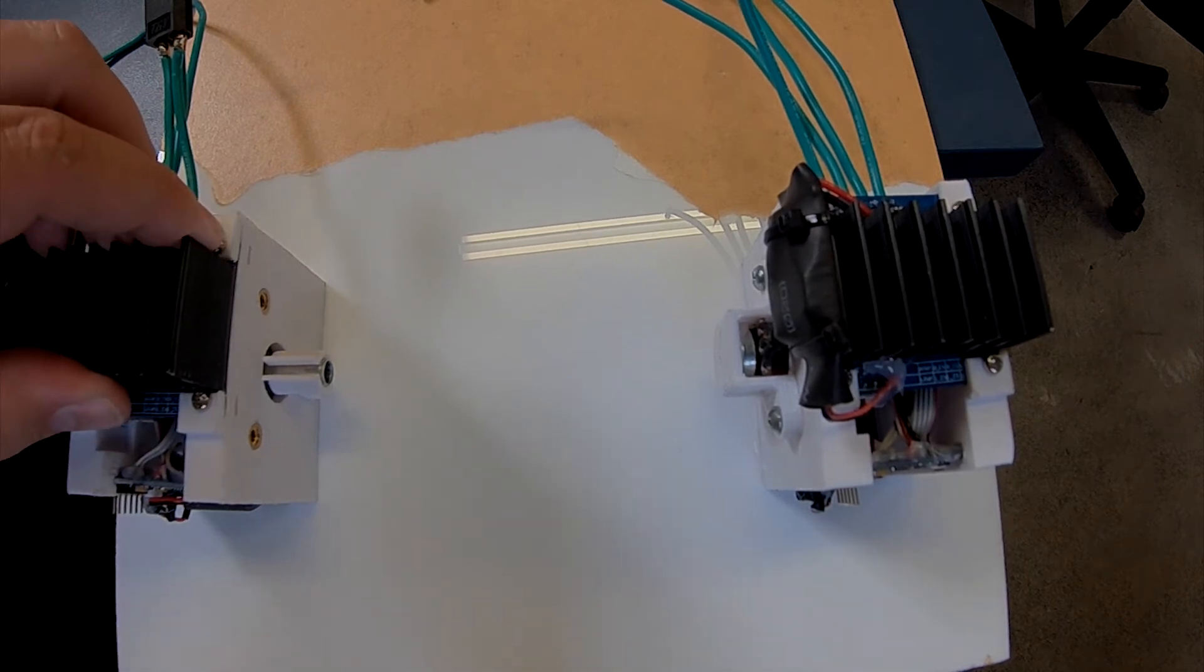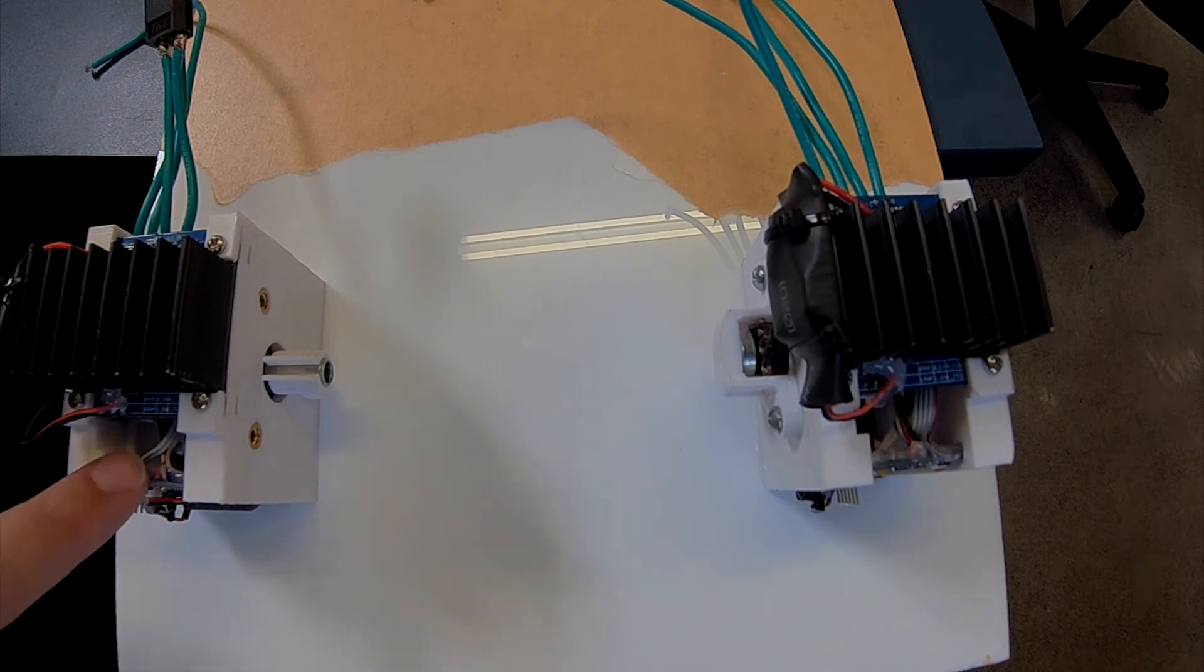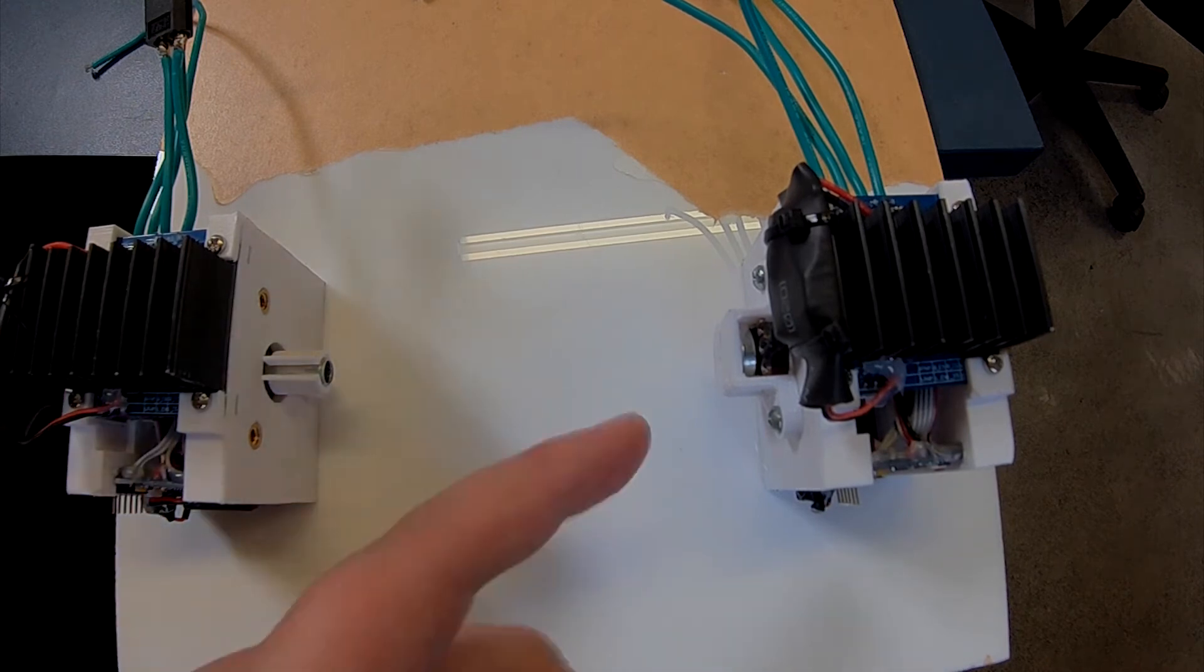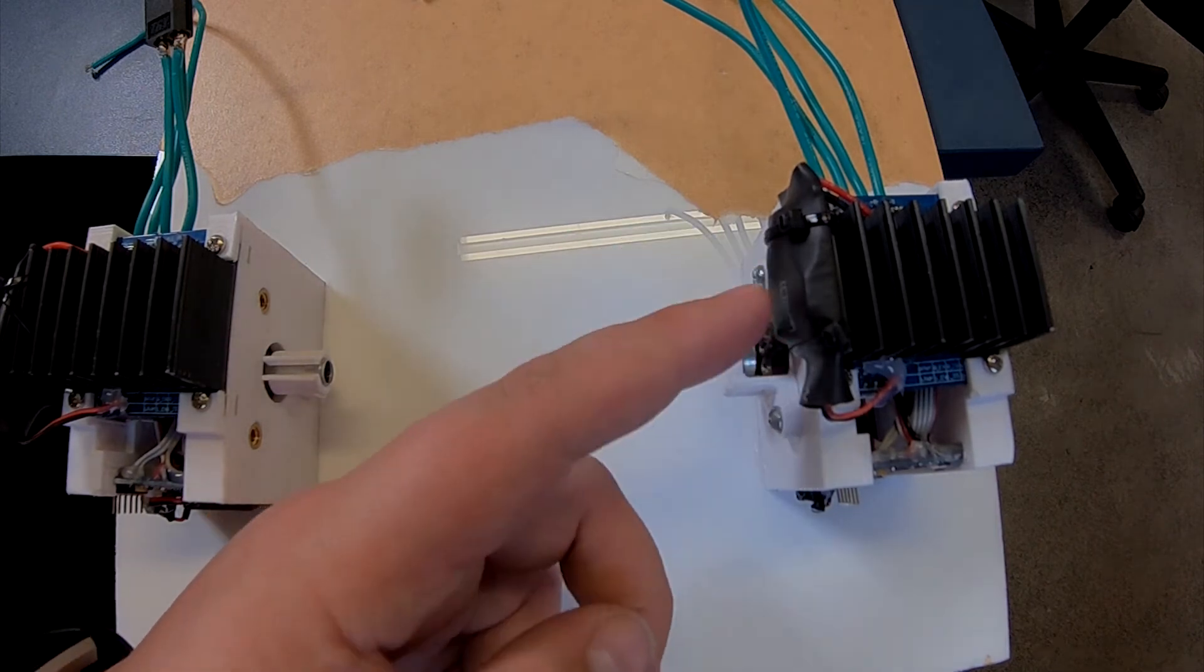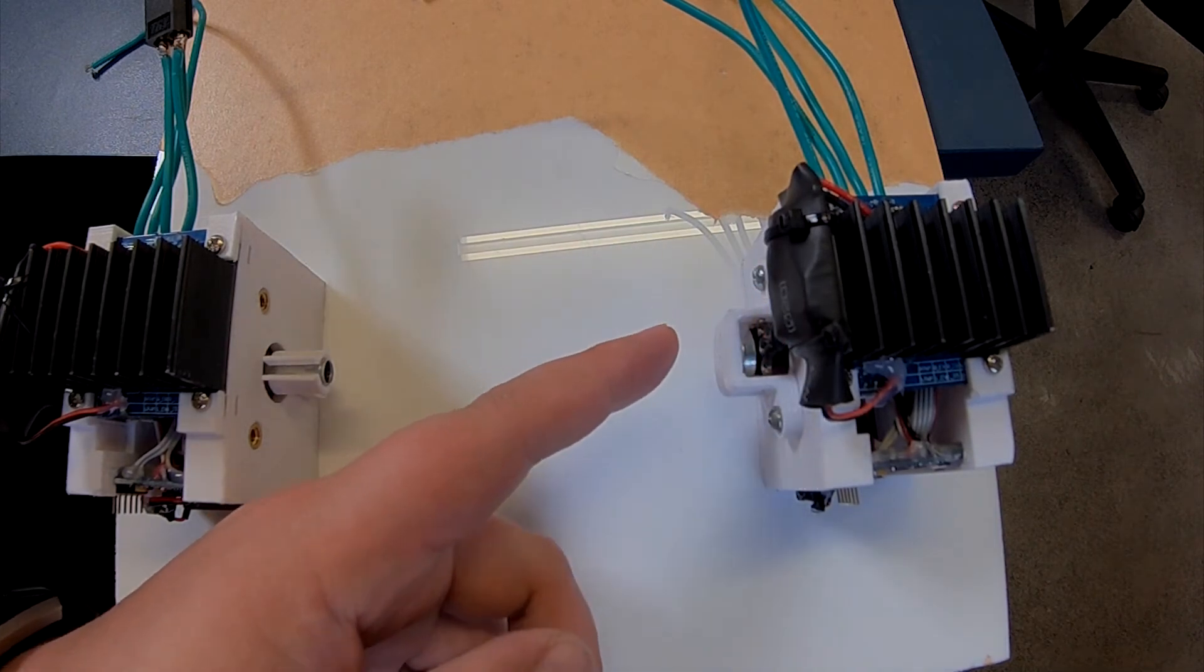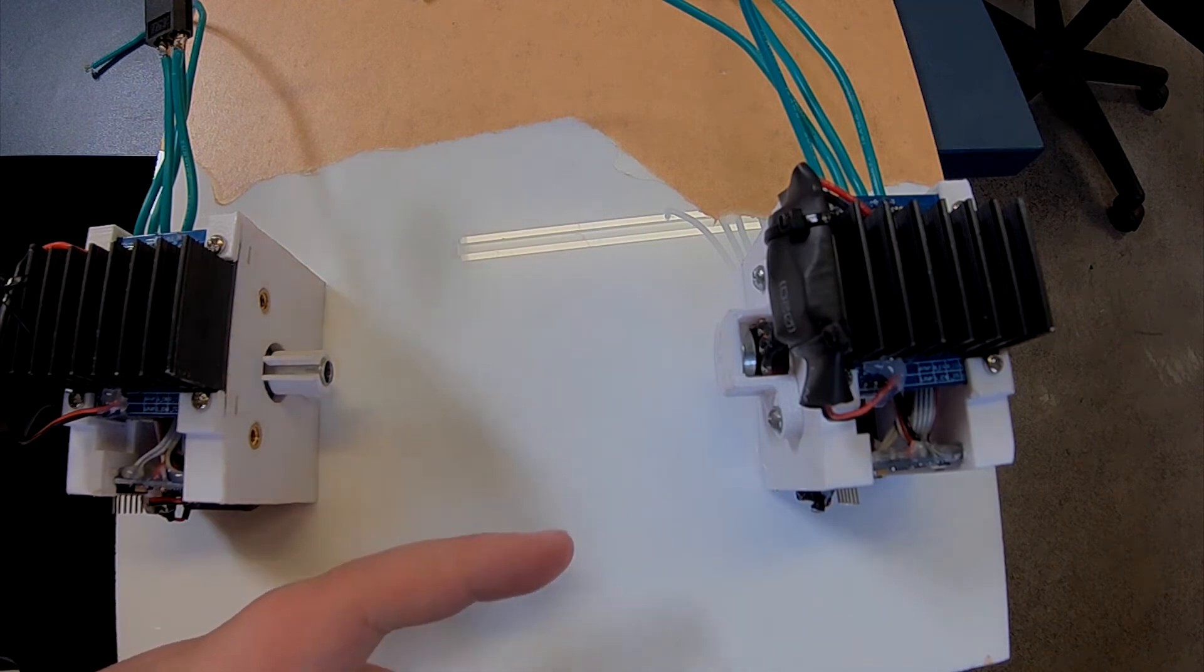Then we have the motor controller, the Arduino, and on this side is a potentiometer which you can see here. There's a little 5-volt regulator that powers all of the micro side, and that is really about it.